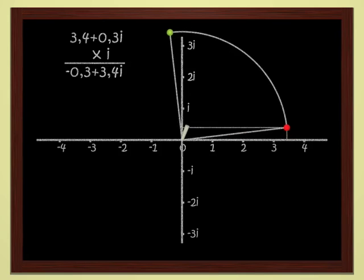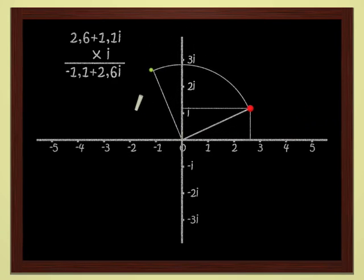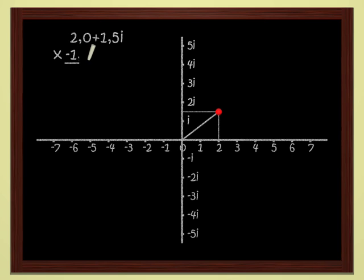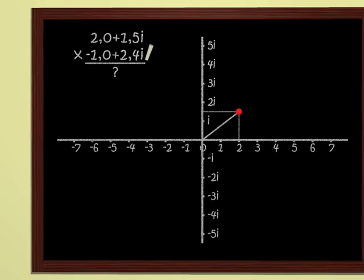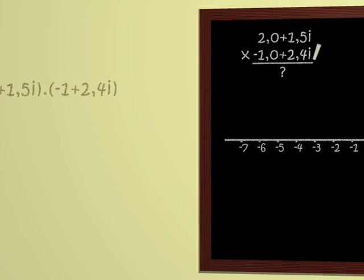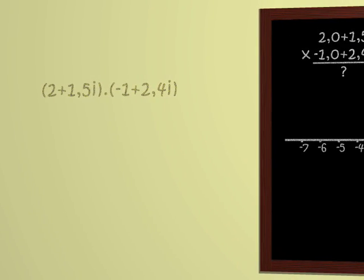And finally, we can multiply any two complex numbers with no problem whatsoever. For instance, let's try to multiply 2 plus 1.5i and 1 plus 2.4i. We proceed as usual. We first multiply by 2, and then by 1.5i, and we add the results.